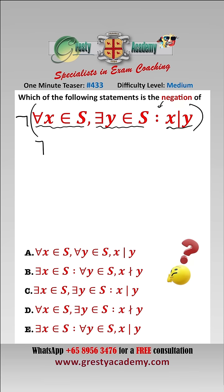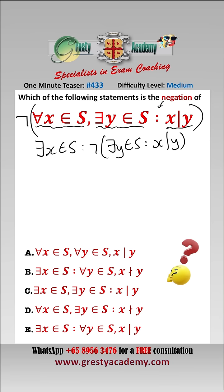The negation of 'for all x in S' is 'there exists an x in S such that it is not the case that there exists a y in S such that x divides y.' So now we need to look at this 'not' here.